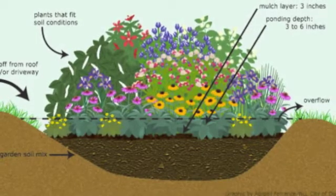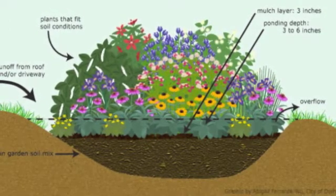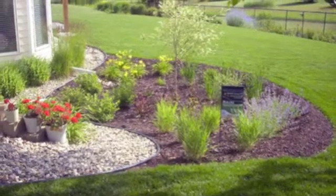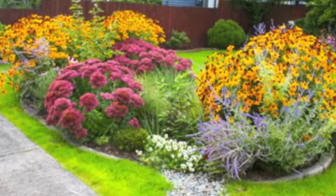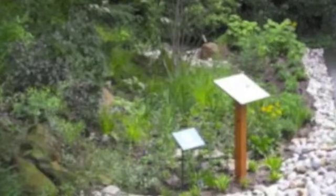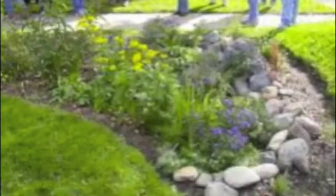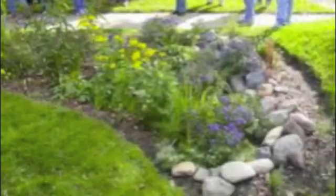A rain garden is a bowl-shaped garden area that is landscaped with specific vegetation to capture and absorb precipitation, also known as storm water. Usually the plants used are perennial flowers and native vegetation to better soak up the rain water. These may only look like gardens, but they are actually strategically planned and located in certain areas that best absorb the excess water.